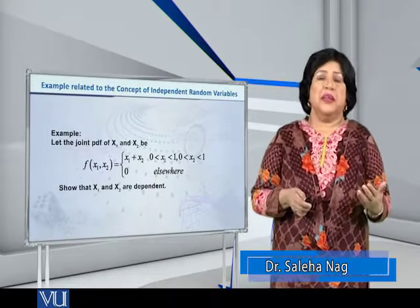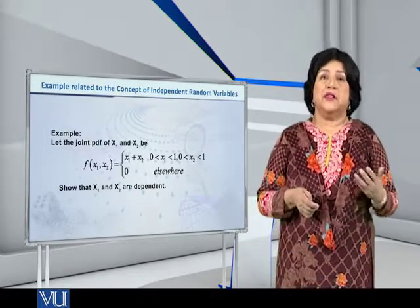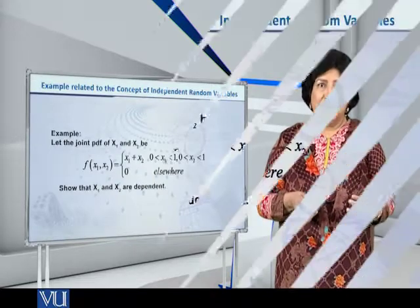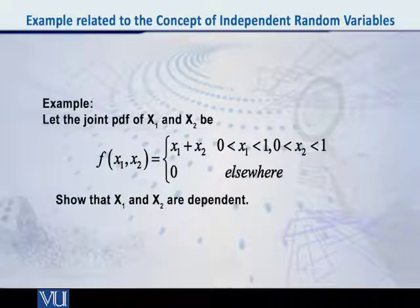Suppose that we have two continuous random variables, x₁ and x₂, with joint pdf f(x₁, x₂) equal to x₁ plus x₂, such that x₁ lies between 0 and 1 and x₂ also lies between 0 and 1, and f(x₁, x₂) is equal to 0 elsewhere. Now, we want to see if x₁ and x₂ are independent. Can we regard them as independent random variables?